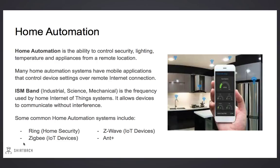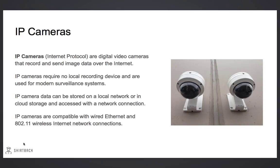Some common home automation systems include Ring, ZigBee, Z-Wave, and Ant Plus. IP cameras are digital video cameras that use the Internet protocol to record and send image data. IP cameras require no local recording device and are used primarily in modern surveillance systems. IP camera data can be stored locally on a network or remotely in cloud storage. IP cameras can be compatible with both wired Ethernet and 802.11 wireless internet connections.